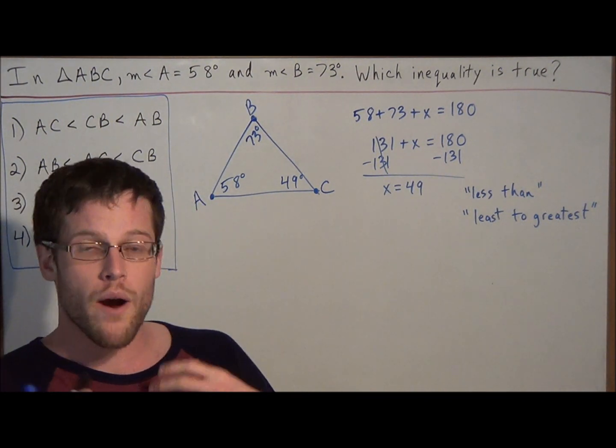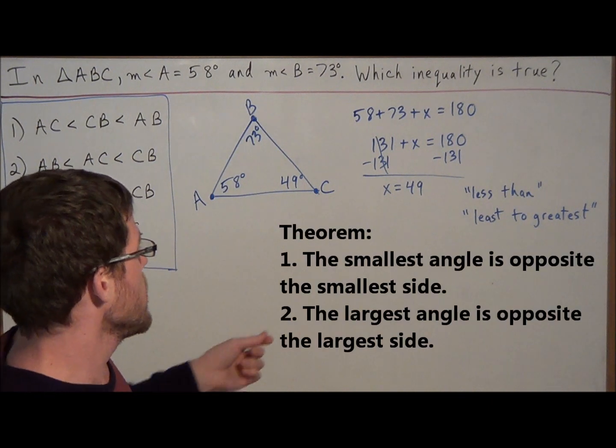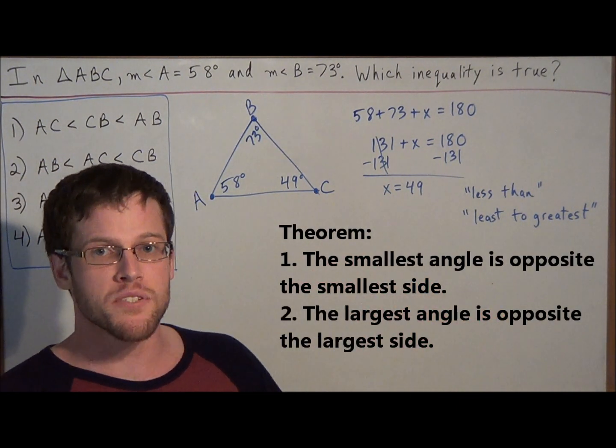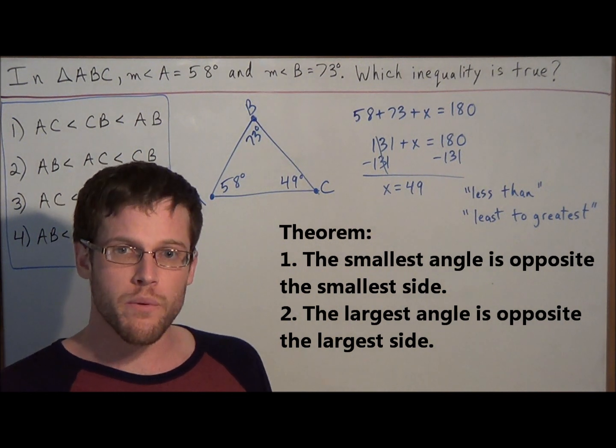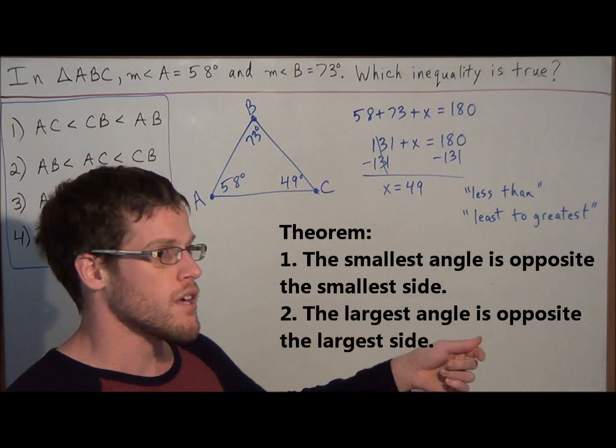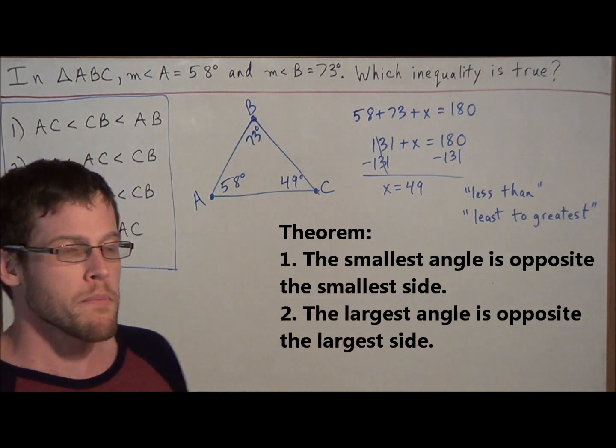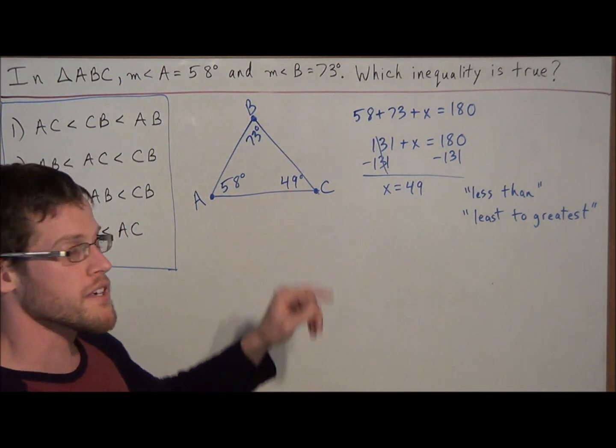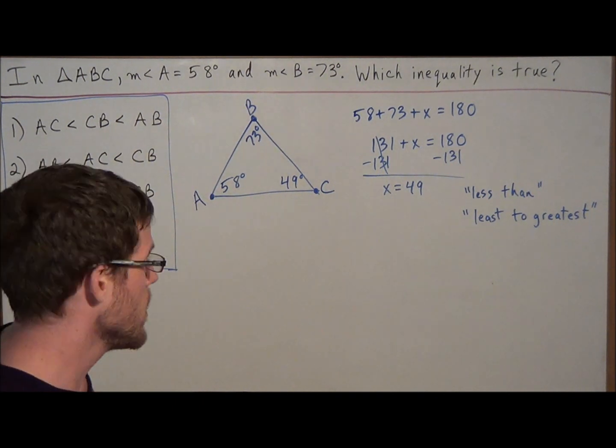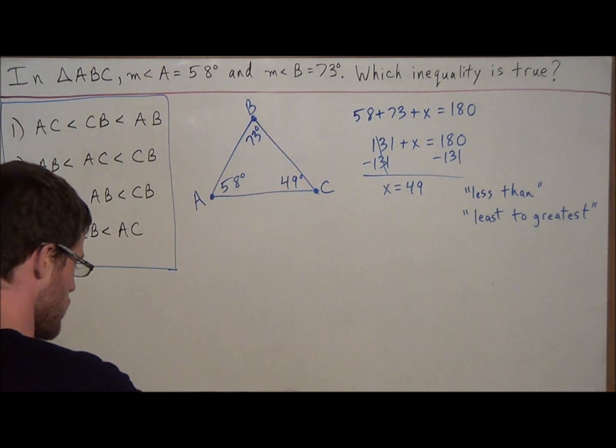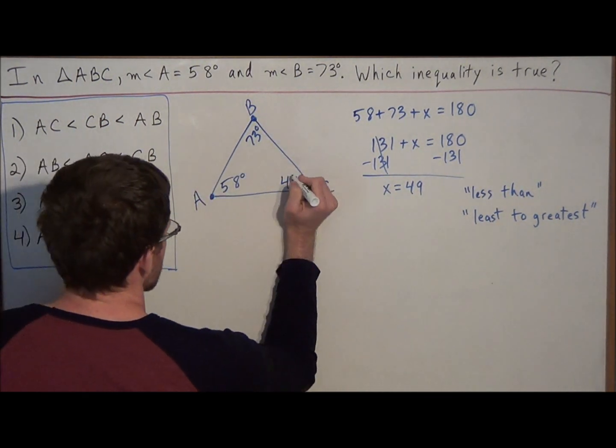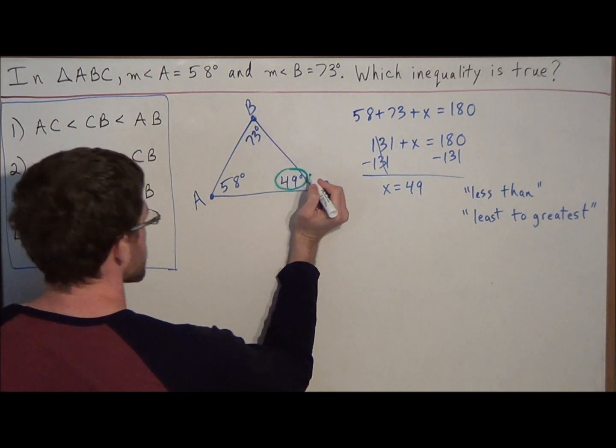So next we're going to use the theorem which states that the smallest angle in a triangle is opposite the smallest side. Or the other way we could say it is that the greatest angle is opposite the greatest side. But because we're going from least to greatest, we want to start with the idea that the smallest angle is opposite the smallest side. So that means we have to start with the smallest angle in our diagram. And notice that 49 degrees is the smallest angle.